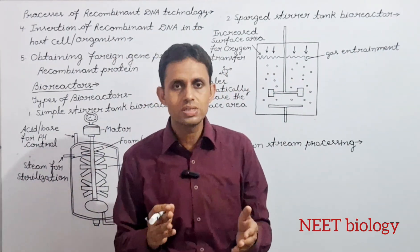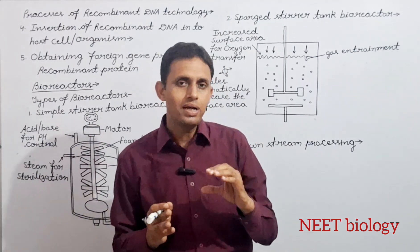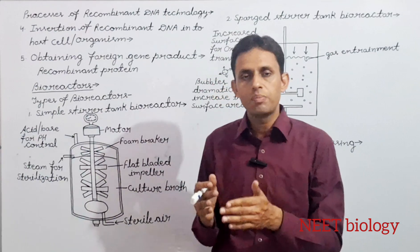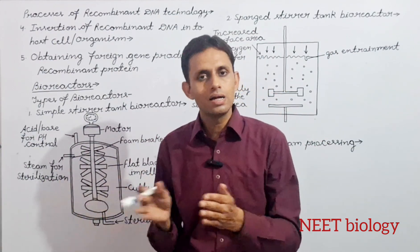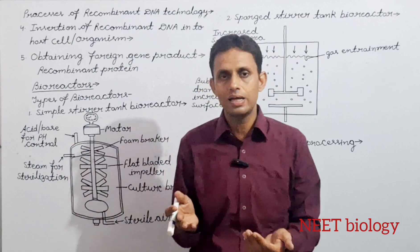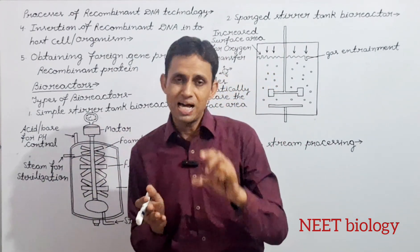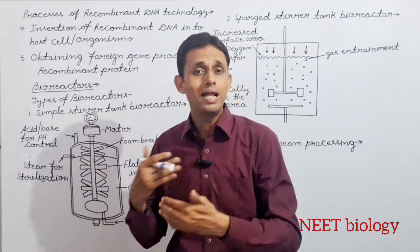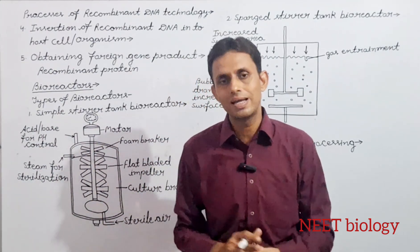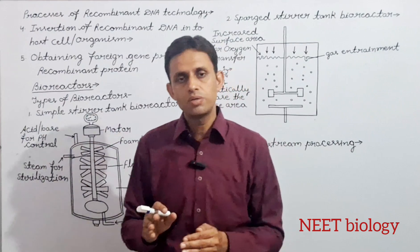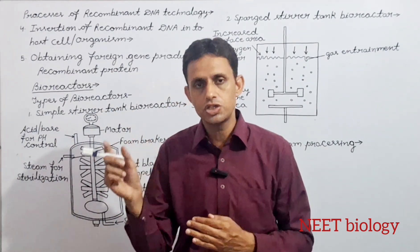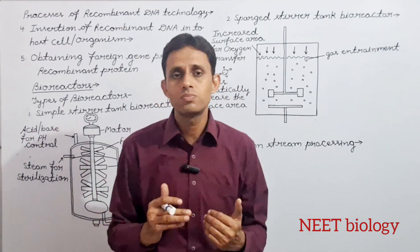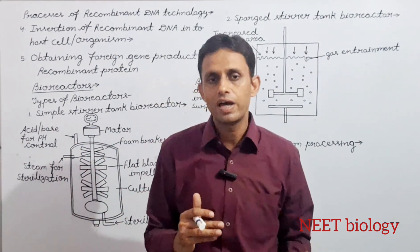अब इस recombinant DNA को host cell या organism में insert करते हैं। Different techniques की help से, cell के अनुसार, recombinant plasmid को host cell के अंदर introduce करते हैं। फिर transformed cells को अलग-अलग media पर plating करके identify कर लेते हैं। Plasmid के अंदर antibiotic resistance gene एक selectable marker है जो हमें transformed cells को select out करने में help करता है।